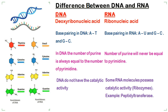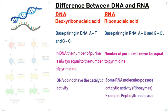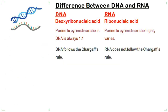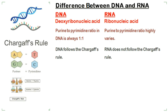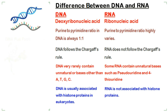DNA does not have catalytic activity, while some RNA molecules show catalytic activity. The purine to pyrimidine ratio in DNA is always equal, while in RNA the purine to pyrimidine ratio highly varies. DNA follows Chargaff's rule, while RNA does not follow Chargaff's rule.